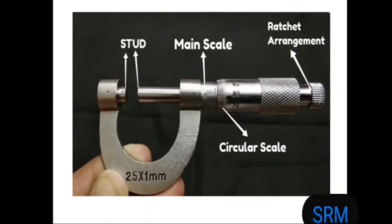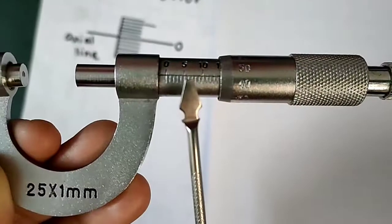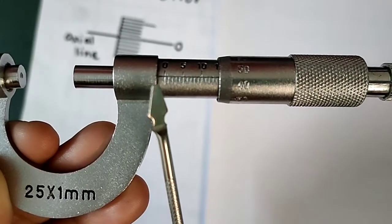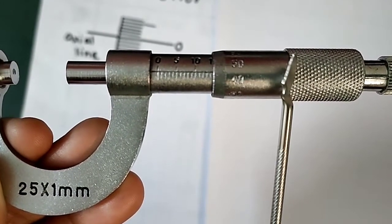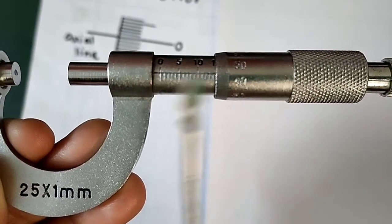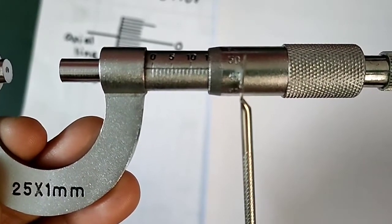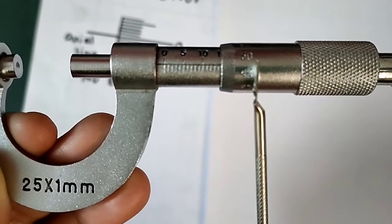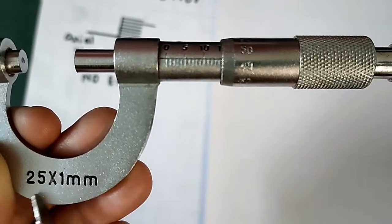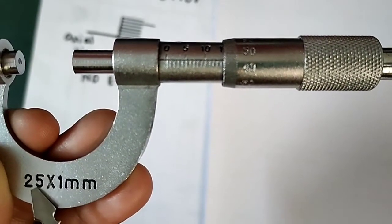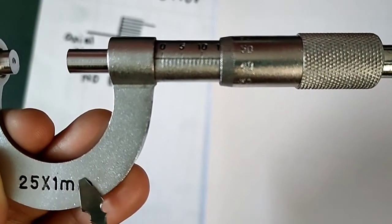We can observe the main scale and circular scale in this given instrument. You can see the different parts on this micrometer screw gauge — this is the main scale and this is the circular scale. By using this instrument, you can measure up to 25 millimeters.